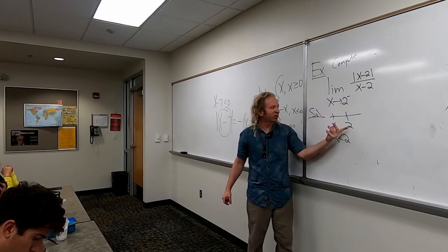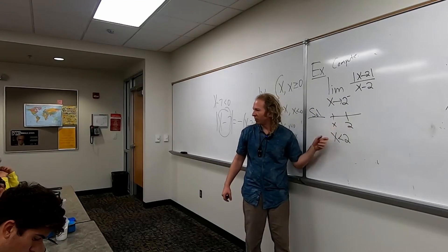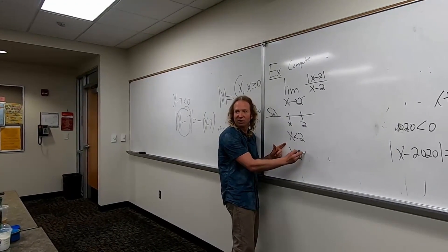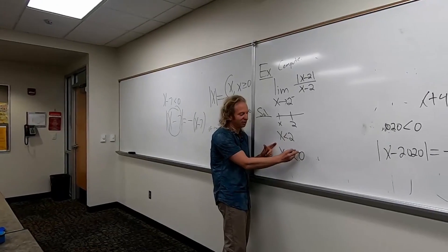Whenever you have an absolute value like this and a limit, a one-sided limit, the way I always do it is I draw a little picture, figure out which way it's going, create the inequality, and now watch this. You can subtract 2. So you get x minus 2 less than 0.